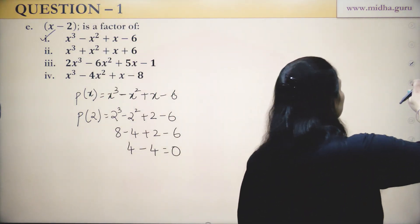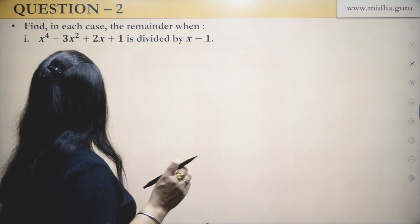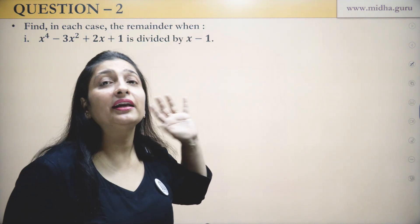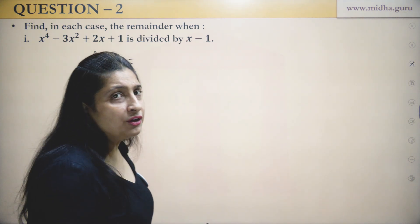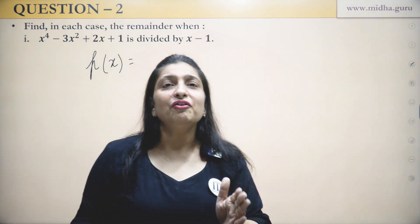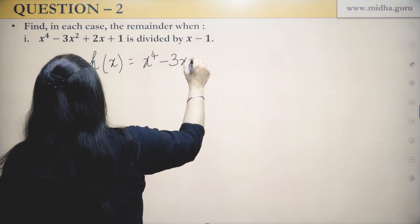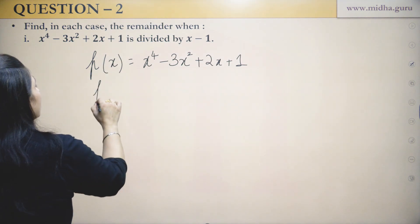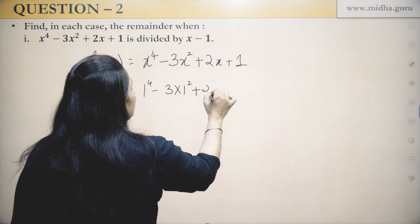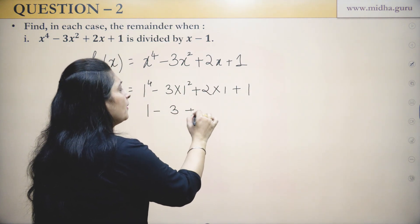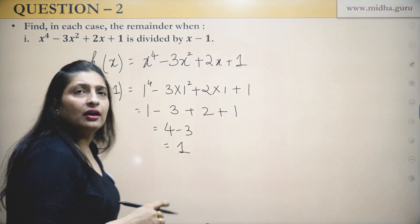Question: Find the remainder when x⁴ − 3x² + 2x + 1 is divided by X − 1. Using the Remainder Theorem, the remainder is p(1). Substituting: 1⁴ − 3(1²) + 2(1) + 1 = 1 − 3 + 2 + 1 = 1. So the remainder is 1.